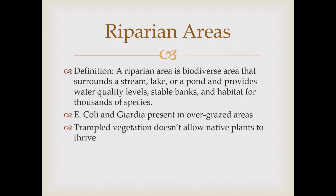Riparian areas — definition. A riparian area is a biodiverse area that surrounds a pond and provides water quality levels, stable banks, and habitat for thousands of species. One of the biggest issues with riparian areas is that they're few and far between, and there's usually a stream that runs through them. Cattle are attracted to those areas, and they end up trampling out the native species and allowing invasive species to come in. A lot of the manure from the cattle produces E. coli.